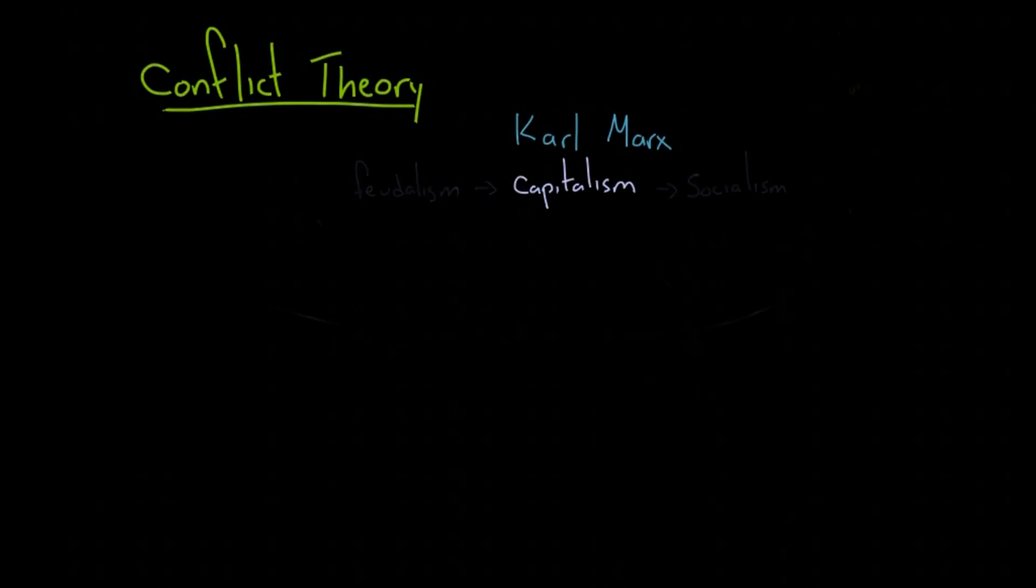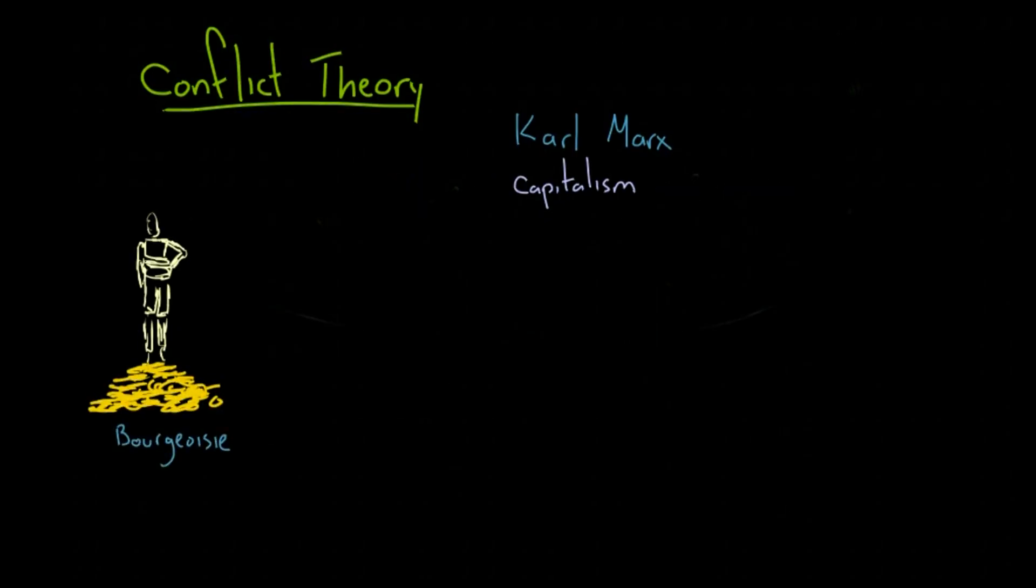19th century Europe was a capitalist society, where the rich upper class, called the bourgeoisie, were a minority of the population, and the poor lower class, called the proletariat, were the majority.